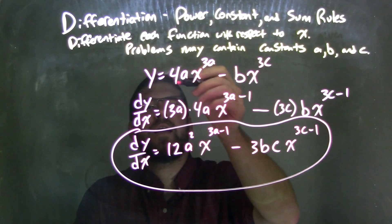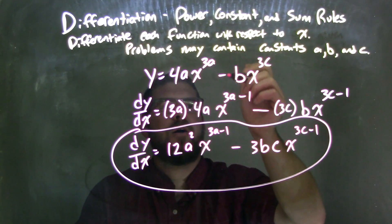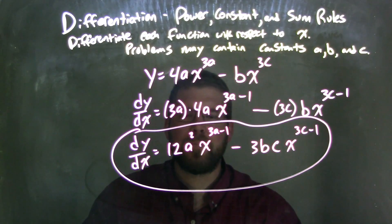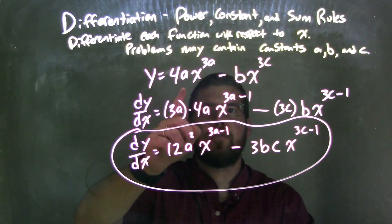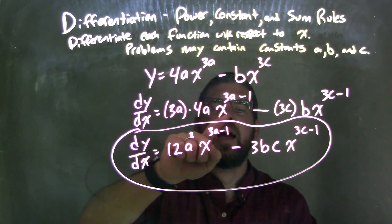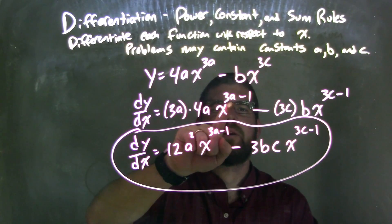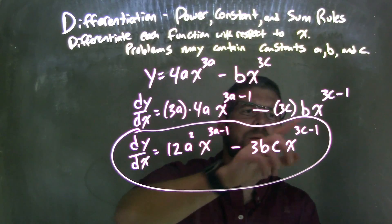So let's recap. We're given y equals 4ax to the 3a power minus bx to the 3c power. Well, what I'm going to do, I'm going to apply my power rule here for both parts, both terms there. I still bring down the 3a, multiply it by the 4a, and then I have x to the, whatever the exponent was, that 3a, we subtract 1 from it. The same thing here. My exponent was 3c, I brought that down in front,